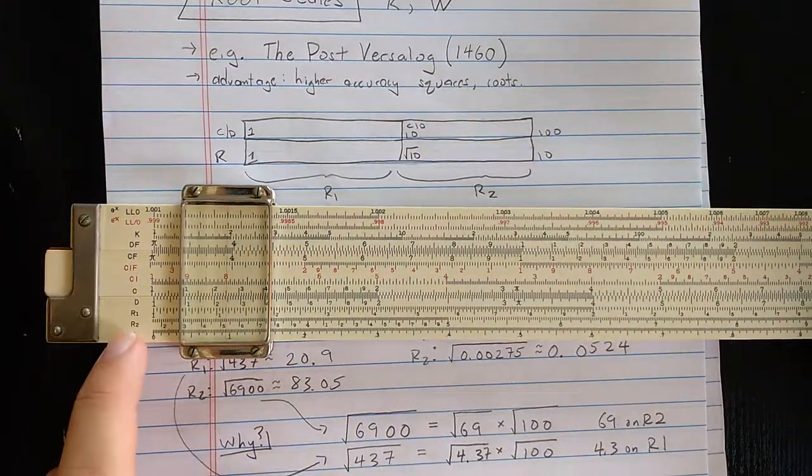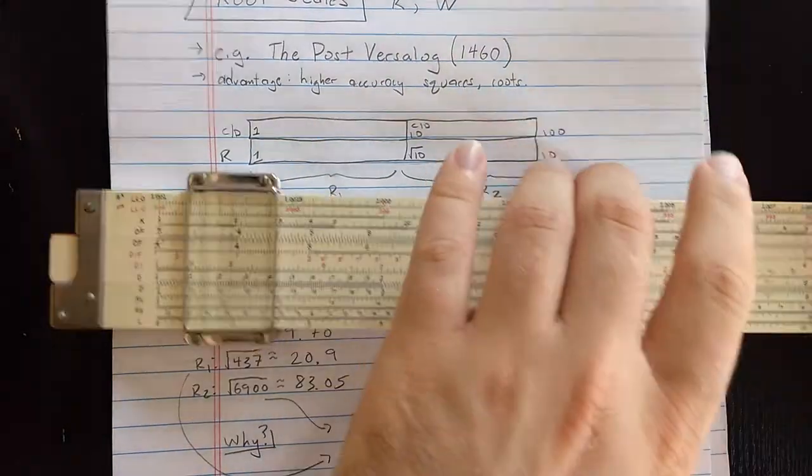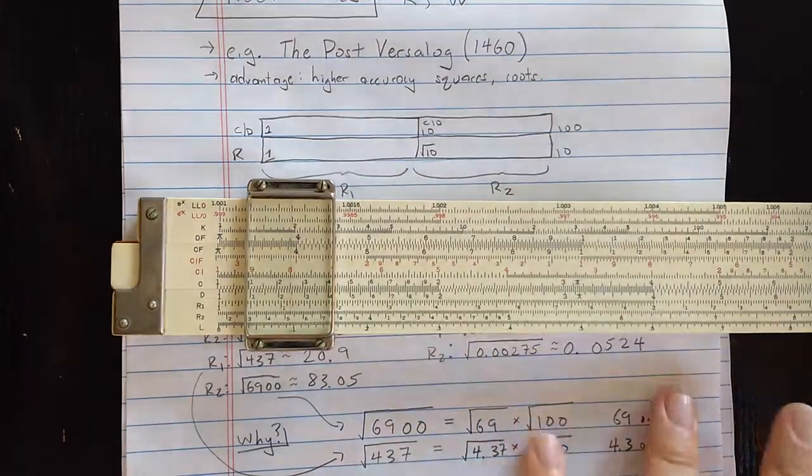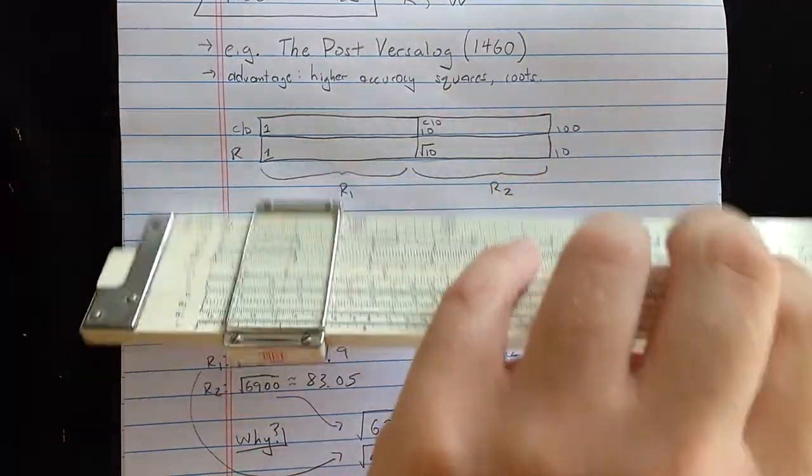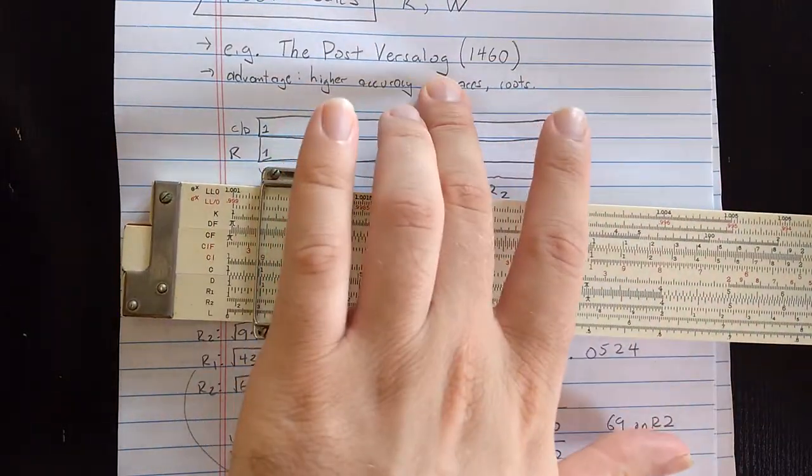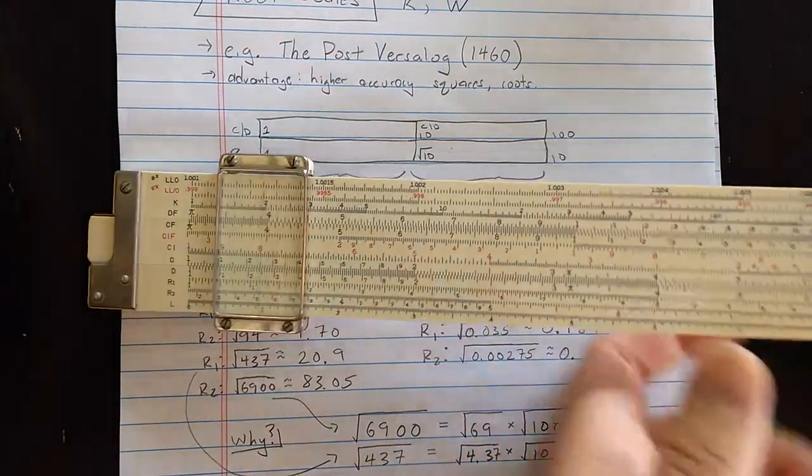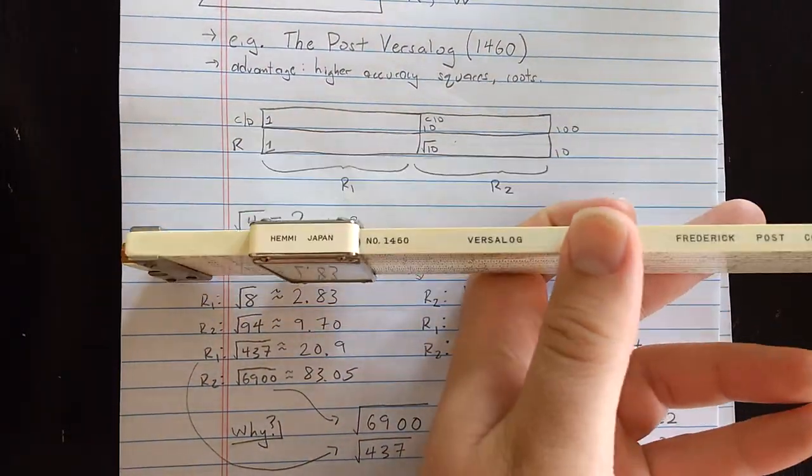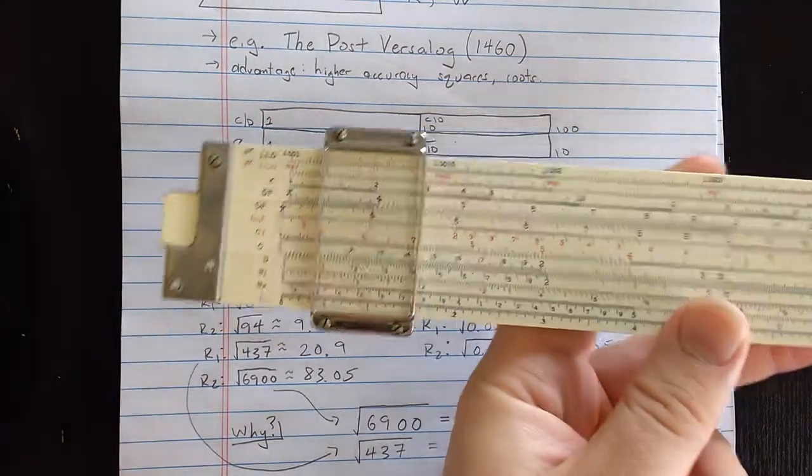Let's call these the root scales, and these are for doing higher accuracy squares and square roots. One thing you'll notice on this slide roll is that there are no A or B scales. There is an A scale on the very late model VersaLog 2, which there are many fewer examples of. The VersaLog with this arrangement was produced for decades. There are a lot of them.